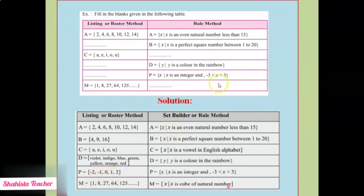Is that clear? We have to take numbers greater than -3. So: -2 is greater than -3, -1 is greater than -2, 0 is greater than -1, 1 is greater than 0, and 2 is greater than 1. Is that clear?